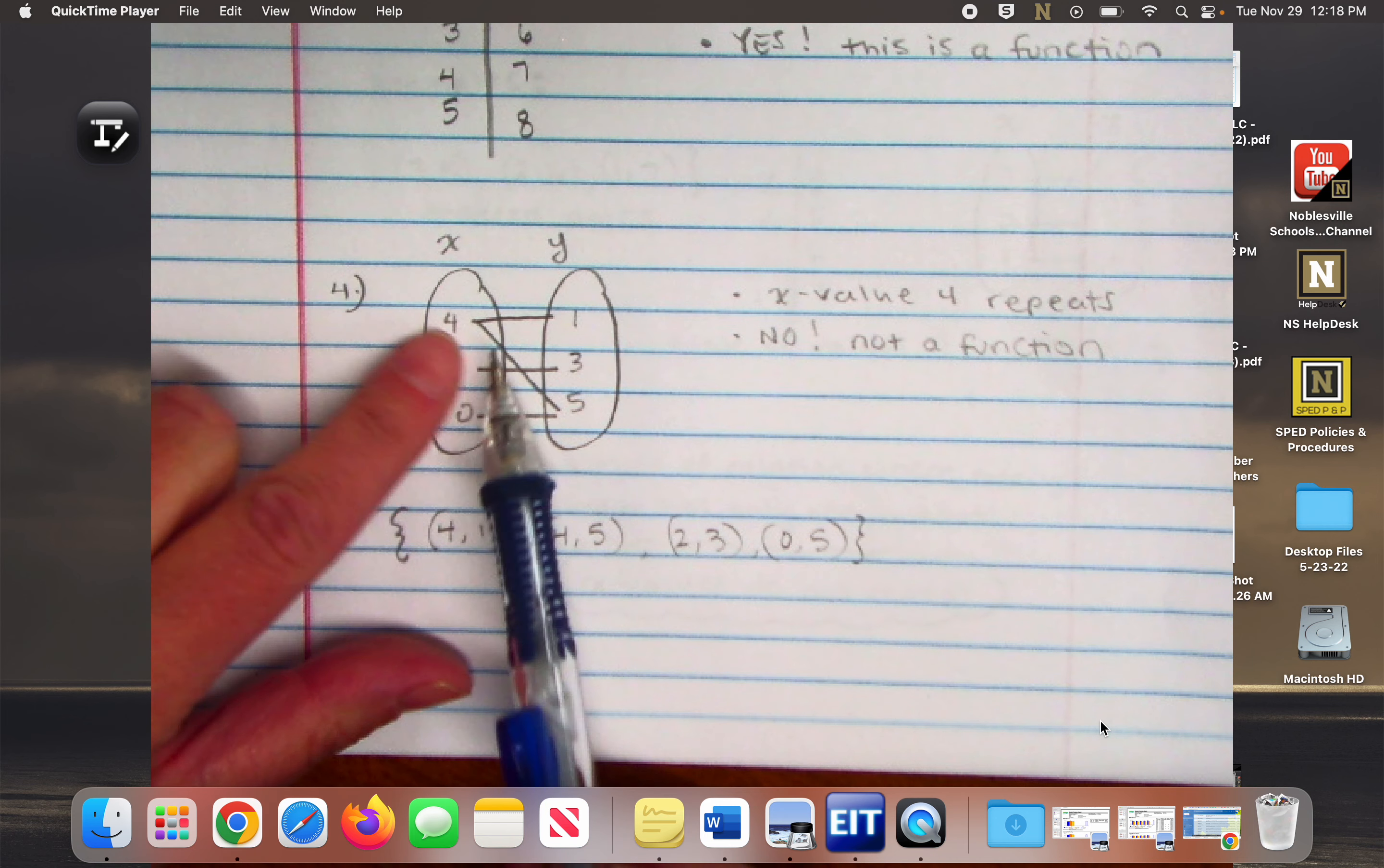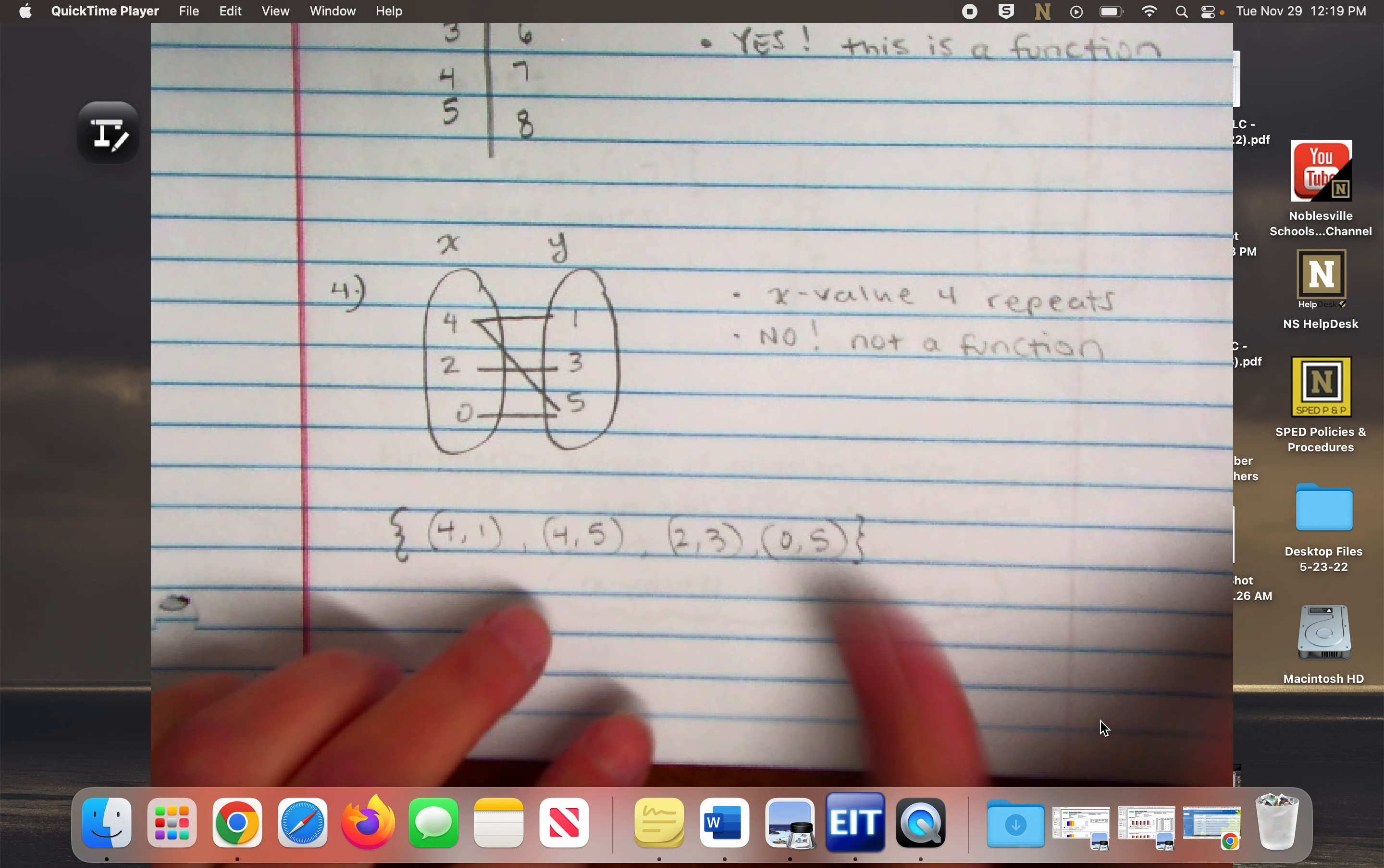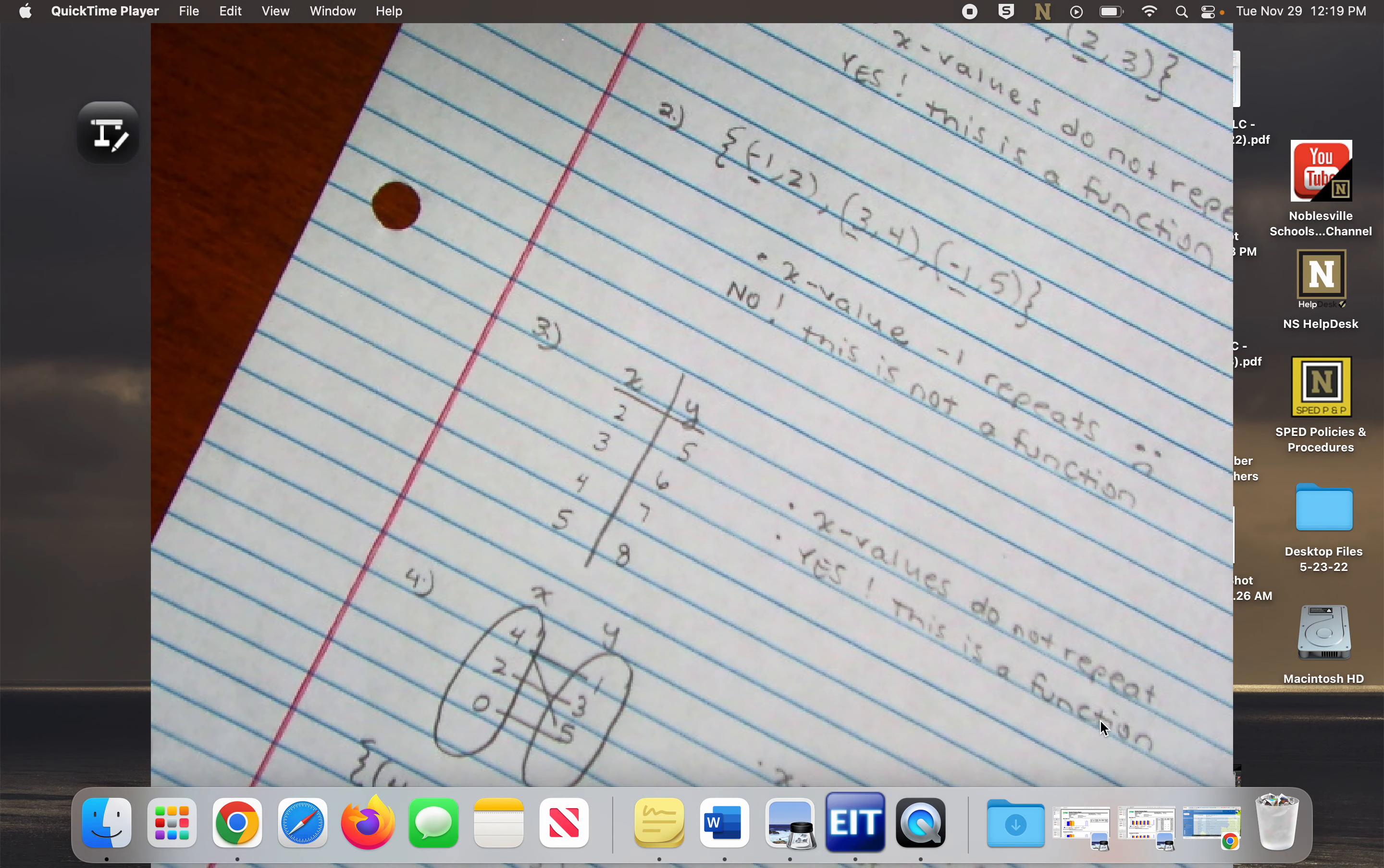Because do you see how it's connected to the 1? So that gives me an ordered pair of 4, 1, and then it's also connected to the 5. So that gives me a second ordered pair that has 4 in the X place. Good question. Okay, so that's it for this day of notes, which was actually yesterday. So put this aside. You need one more piece of paper and a red pencil for today's notes.